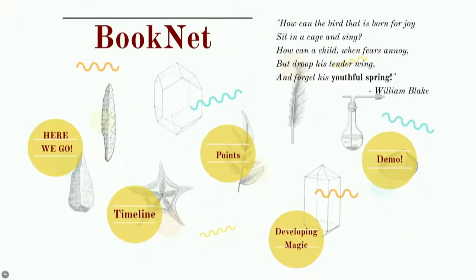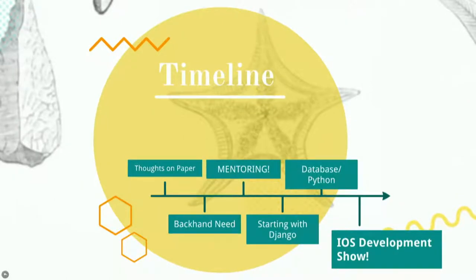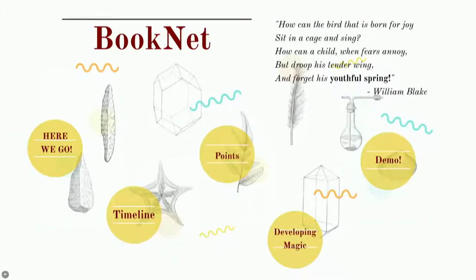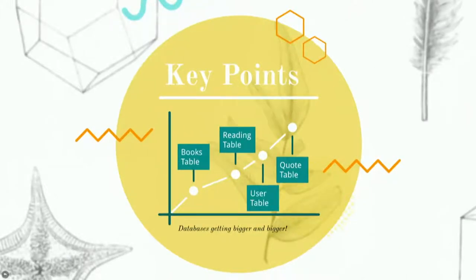Starting with the timeline: first, we wrote all our thoughts on paper — what should we do and what should be our steps. After that, we understood that we should start with the backend, and this was a must for our project. So we took some mentoring, which was really helpful. Then we started with Django and created our databases. Later we used Python, but our developer will explain it more. Then the iOS development phase came. Key points to mention: the databases included a books table, reading table, user table, and quote table.